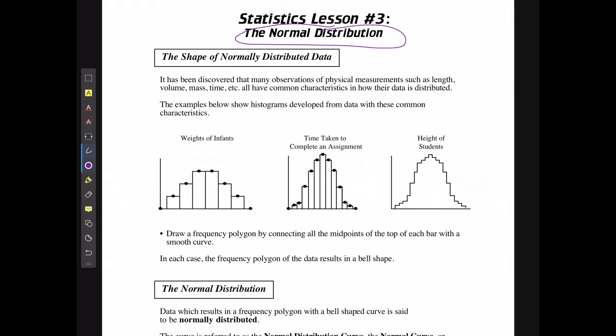The examples below show histograms developed from data with these common characteristics. Looking at the weight of infants, we can see some are very low but most stack up closer into the middle region. For time taken to complete an assignment, some people take way less or way more time than average, but most fit around that average. With height of students, we can have major outliers on either side but most students are in about the same range.